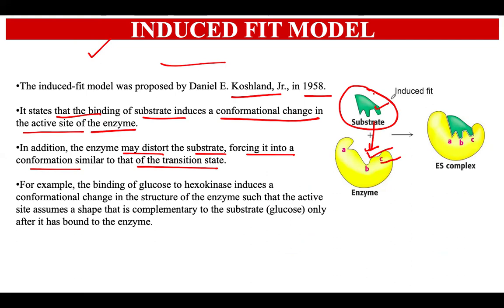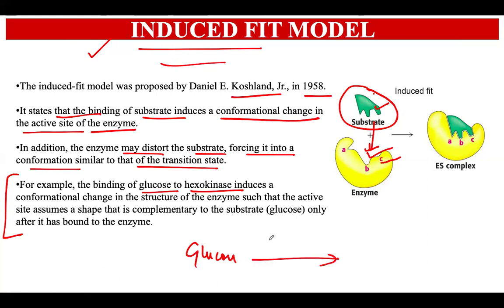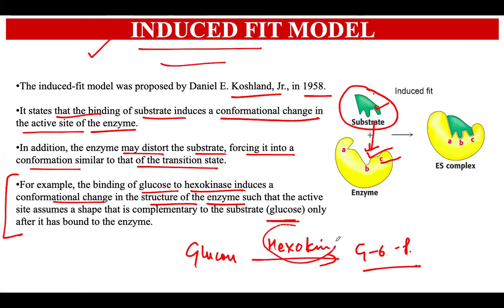Basically, the active site and the substrate can mold their shapes a little bit in order to fit into each other — that is what the induced fit model says. One important example of an enzyme that follows the induced fit model is when glucose binds to the hexokinase enzyme in the glycolysis pathway. When glucose is acted upon by hexokinase for the production of glucose-6-phosphate, there is an induction of a conformational change in the structure of hexokinase so that the glucose can fit into the enzyme.